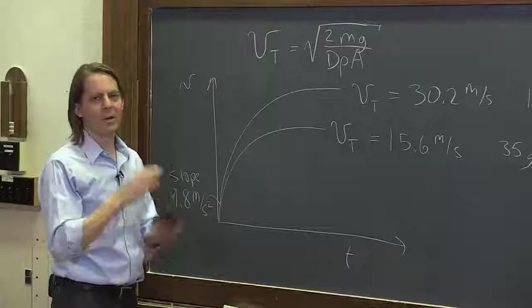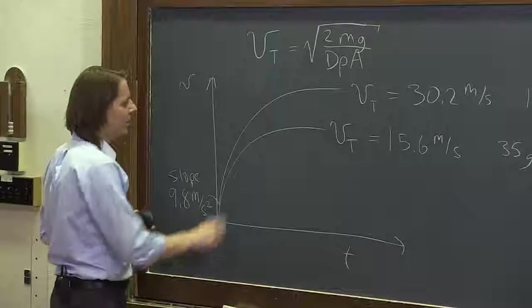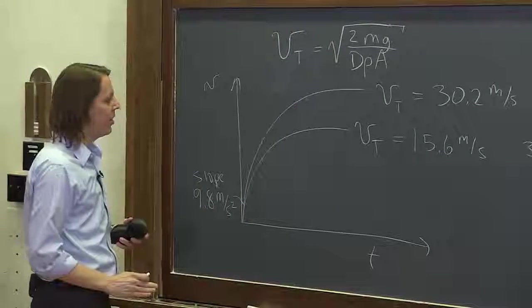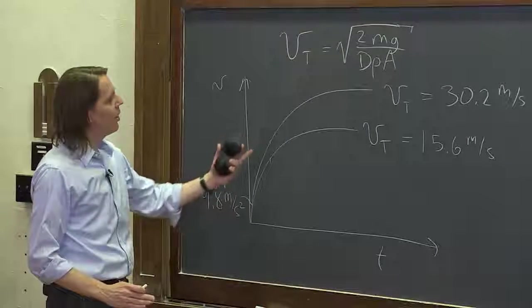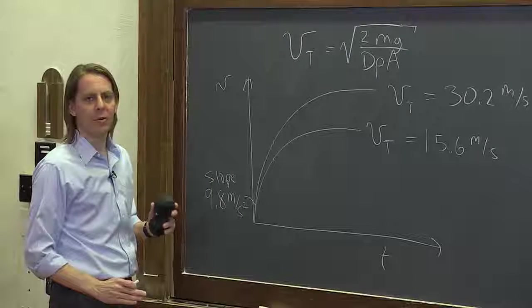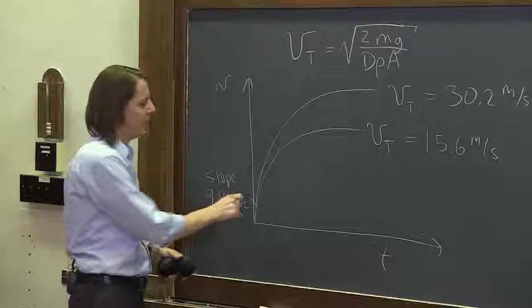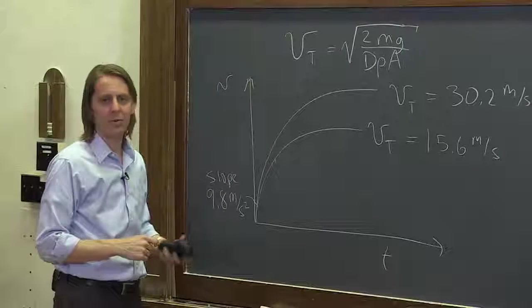But they don't really quite get to that speed. If you estimate how far they would have to fall to get to that speed, it's something like 20 meters, and we weren't really that high. So we really only made it sort of part way to terminal velocity. But you can see from this plot why the heavy ball strikes first. The heavy ball is going faster. They both had to fall the same distance, the heavy ball's going faster, therefore it gets there first, and that's why you saw them hit out of sync.